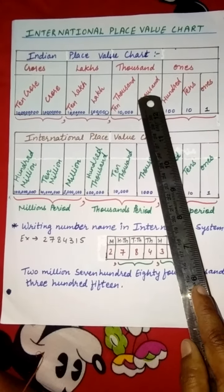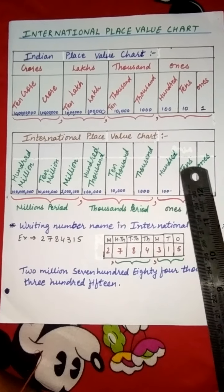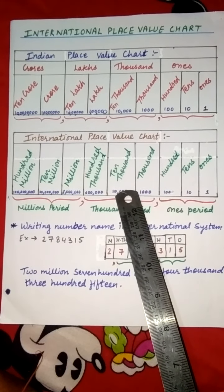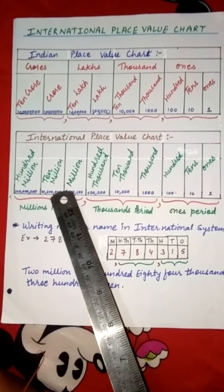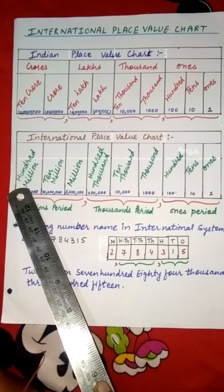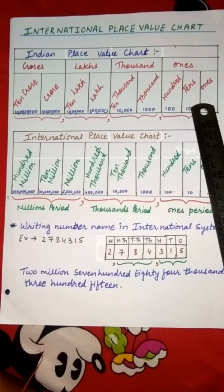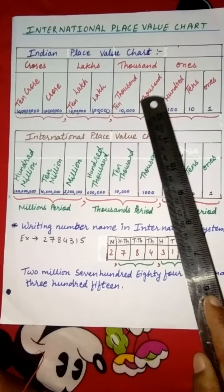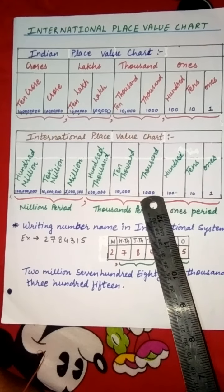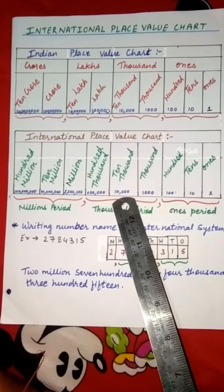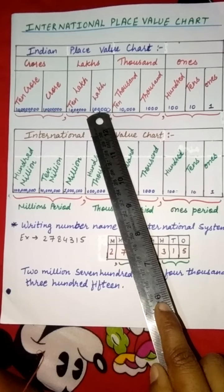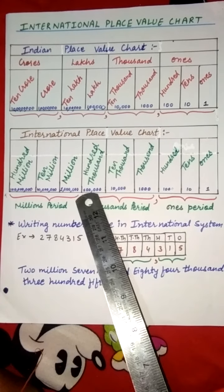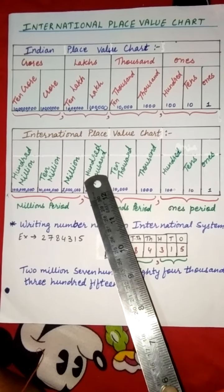So this is the difference between the Indian place value chart and the international place value chart. The 1's period is the same in both. But in the thousands period, there is 100,000 in international, and there is no crore or lakh — there is a million, 10 million, and 100 million period. Remember students, the number of zeros in 1000 is the same in both charts. Like 1000 has 3 zeros, 10,000 has 4 zeros, and a lakh's place has 5 zeros. So lakh becomes 100,000 in the international place value chart — it is 1 lakh, but it is written as 100,000.